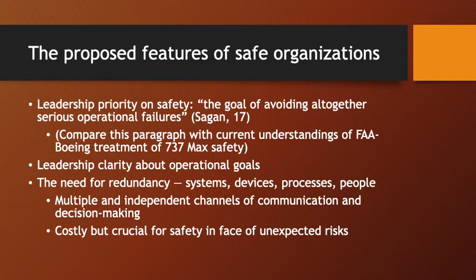A second major discovery of HRO theory is the need for redundancy - redundancy of systems and subsystems, of devices, of processes, and of people. The people dimension is analogous to cross-training: expertise and competence should be spread over a number of people rather than concentrated in a single individual. There should be multiple independent channels of communication and decision making. Redundancy is costly, but it is crucial for safety in the face of unexpected risks.